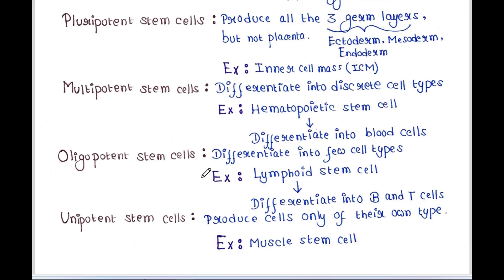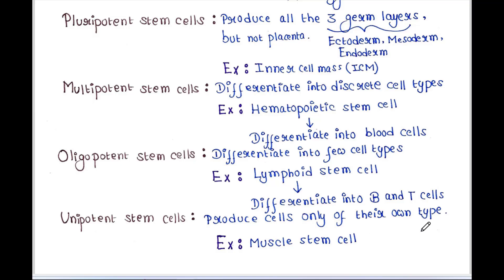Next are oligopotent stem cells, which differentiate into few cell types. For example, lymphoid stem cells can differentiate into B lymphocytes and T lymphocytes. Next are unipotent stem cells, which can produce cells only of their own type — for example, muscle stem cells.